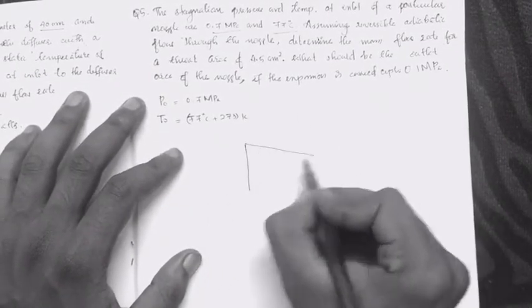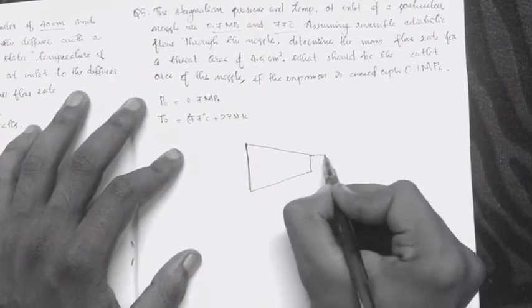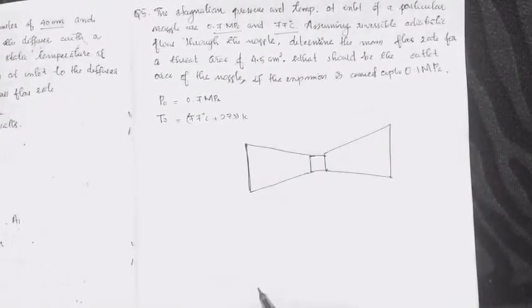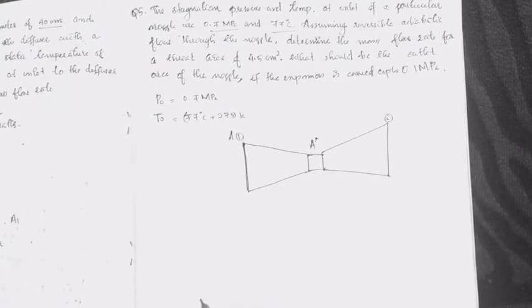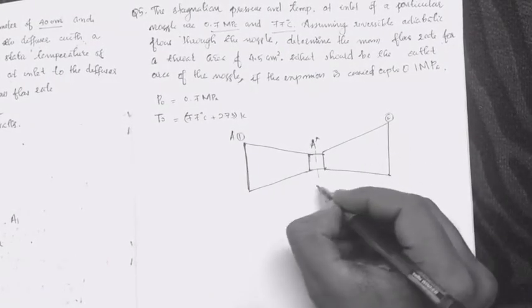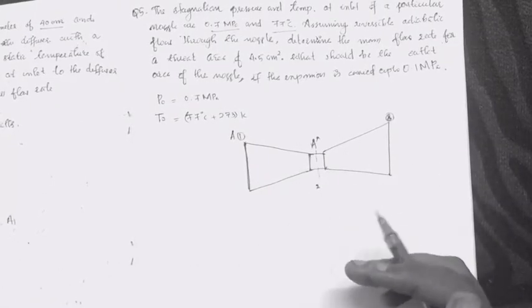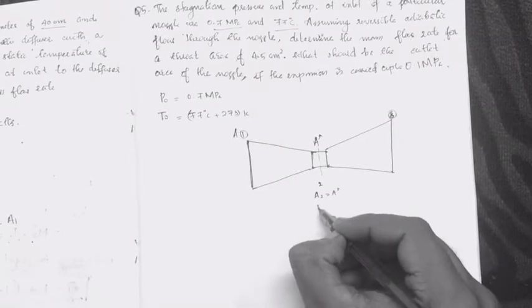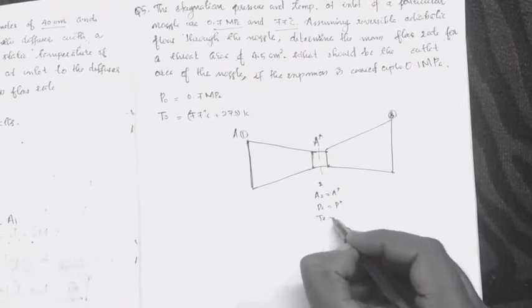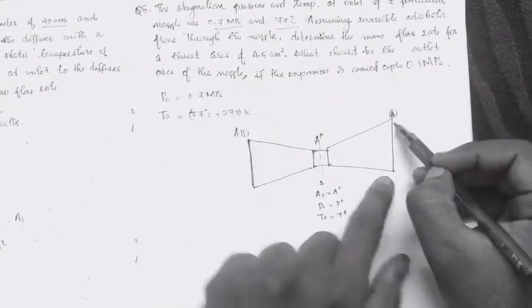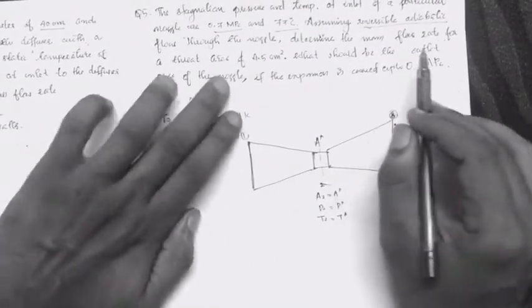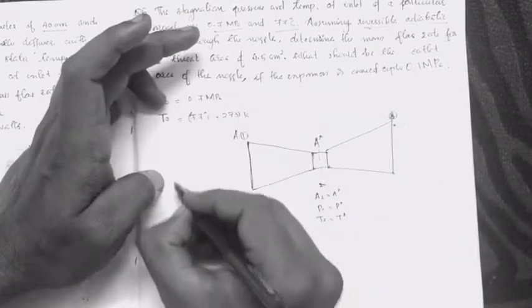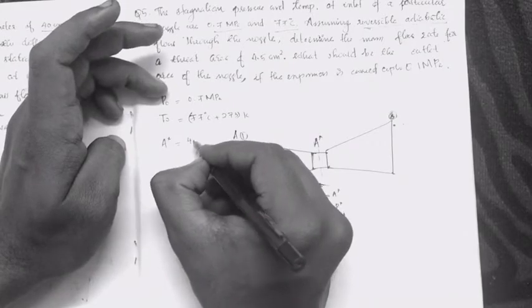We have a convergent-divergent nozzle with a throat area A*. Section 1 is the inlet, section 2 is the throat, and section 3 is the exit. The throat properties are at section 2. Given A2, A* is 4. Similarly, P* is 4 and T* is 4 from the isentropic relations.